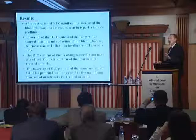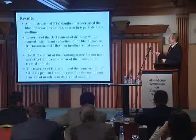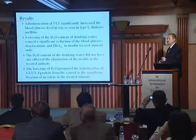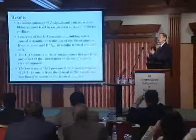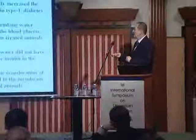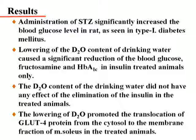So let's summarize what we got. First of all, we could induce diabetes — not a big deal. However, if we lower the deuterium content of water, it interferes with insulin-induced glucose utilization. That's very good. This deuterium did not influence the elimination of insulin, but it did influence the GLUT4 protein transport system — the translocation expression of this protein system.